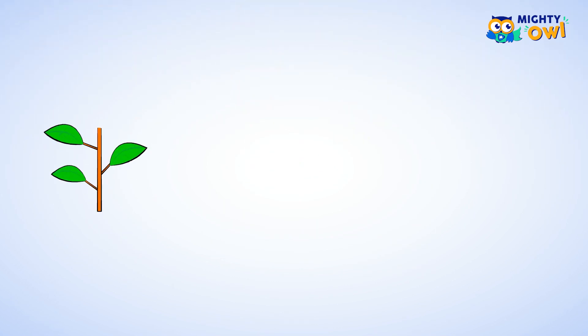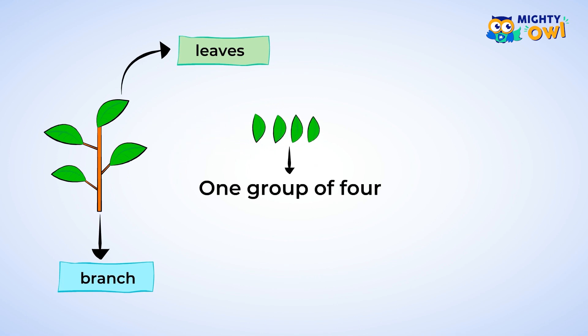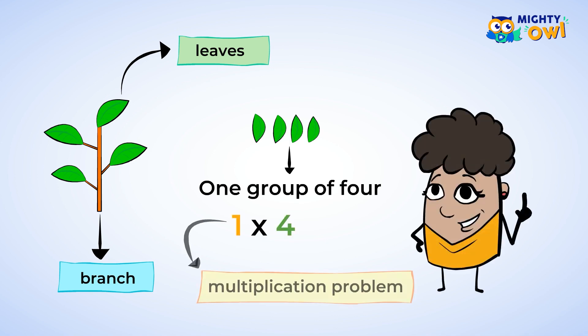Let me show you how to use multiplication as groups. Here we have leaves on a branch. There is one group of four leaves. You just learned that you can write this as a multiplication problem. One group of four can be written as one times four, because there is one group of leaves and there are four leaves in total. One times four is equal to four.